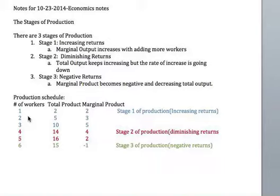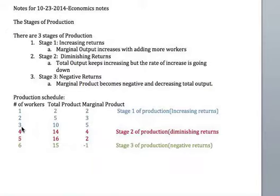Everything in blue shows increasing returns. With one worker you have a total product of two and marginal product of two. Add a second worker and the two workers combined have a total product of five, so the marginal product is three. With a third worker those three workers produce a total product of ten — marginal product moved from five to ten, an increase of five.